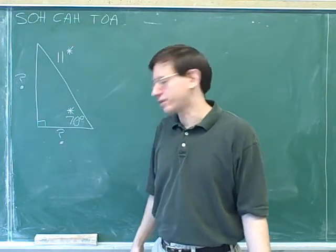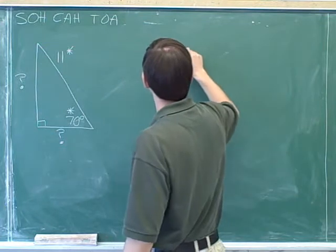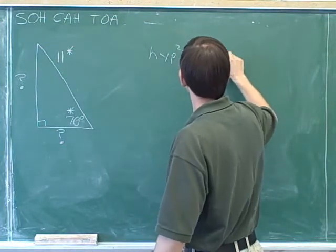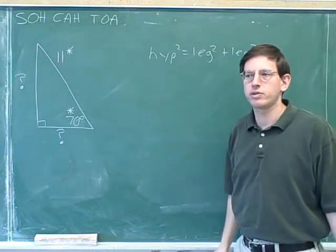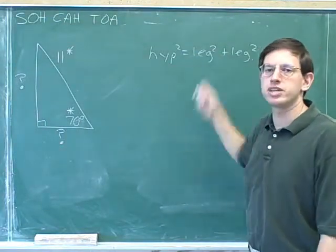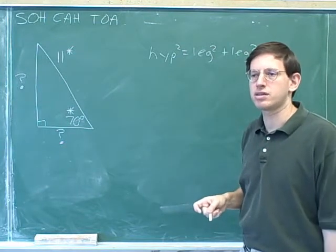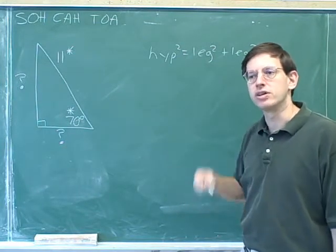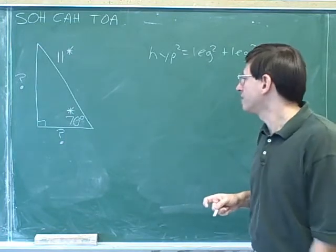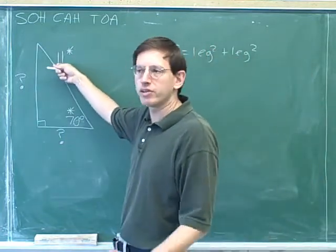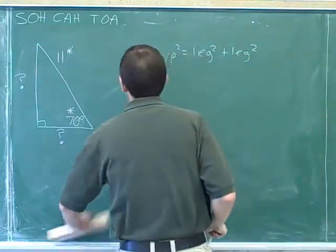We're certainly not going to use the Pythagorean theorem. The Pythagorean theorem won't help us, because to use it you have to know two of the variables. If you know two of the sides, you can use the Pythagorean theorem to find the third side. But in this problem I only told you one side, so the Pythagorean theorem isn't much help. We're going to have to rely on our trig functions.